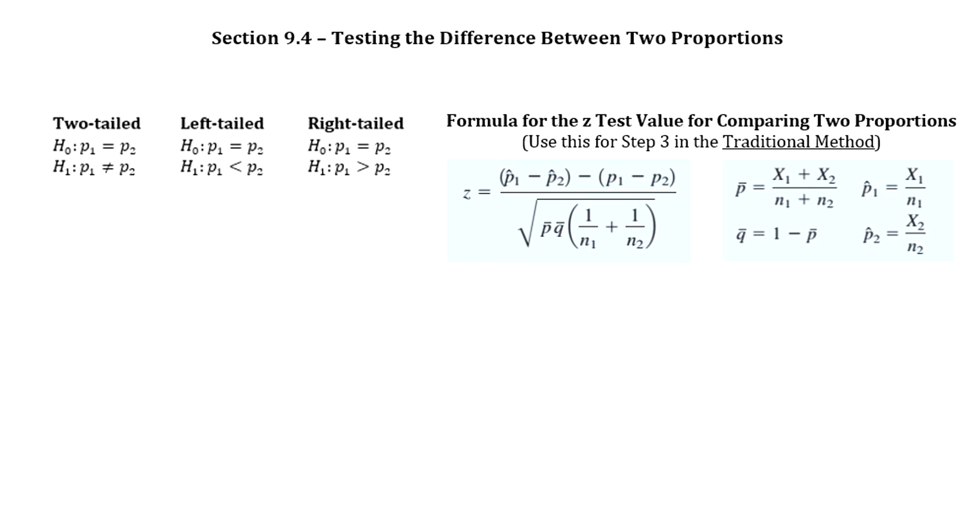Okay, so we're going to do section 9.4, which is the last section in chapter 9, and it is testing the difference between two proportions. So we are going to do both methods in this section, the traditional method and the p-value method.